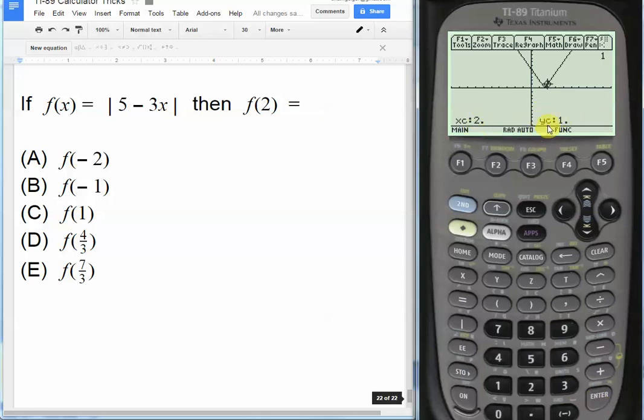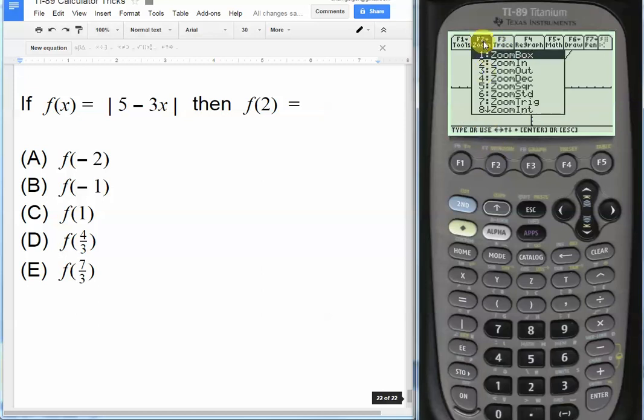So we want to find which one of these other choices, a, b, c, d, or e, also gives us an output of y equals 1. Now if we actually zoom in here, you don't have to do this, but I'll do it to make it a little clearer.